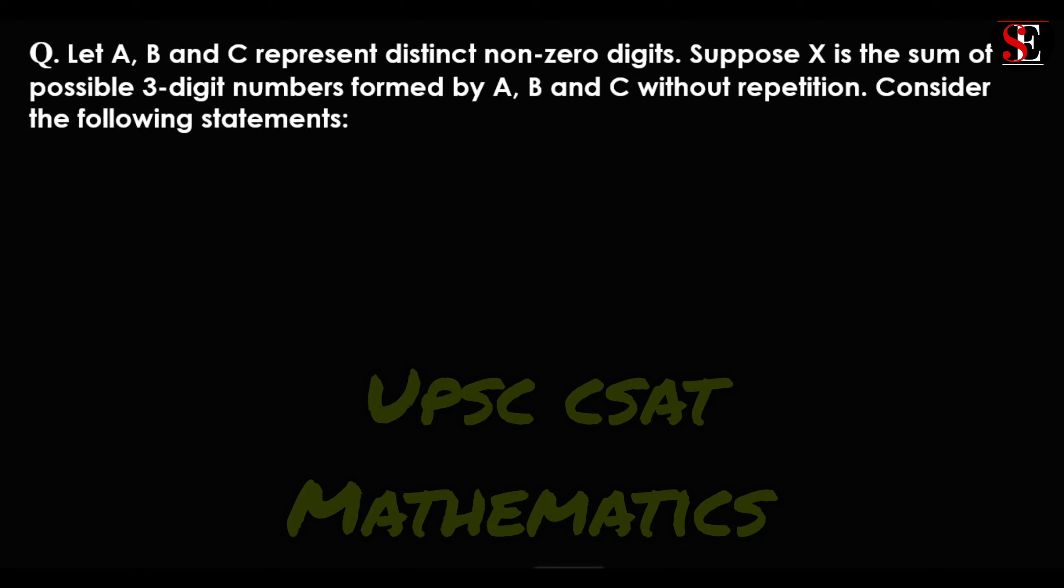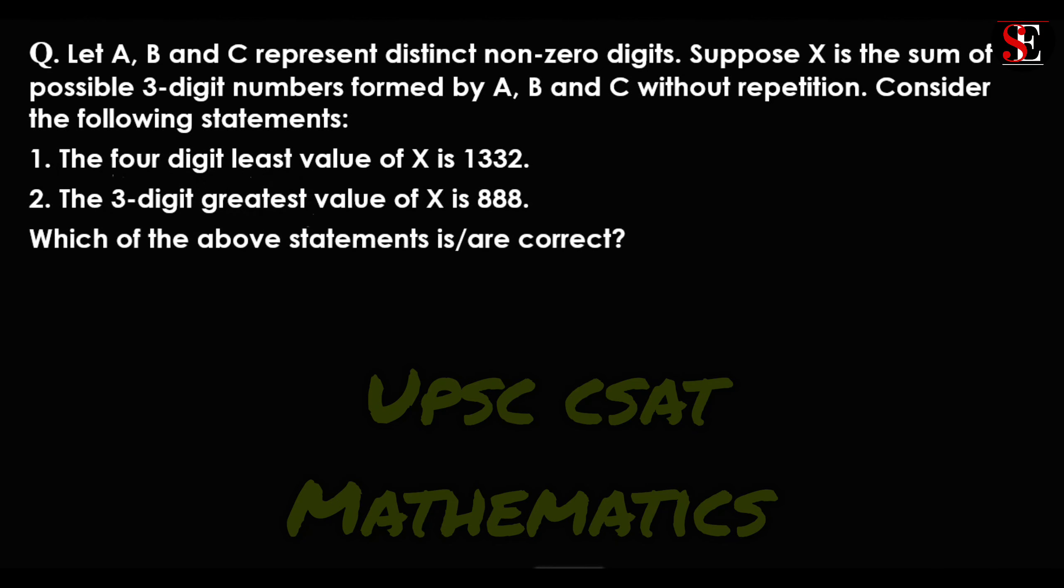Consider the following two statements. Statement 1 is the 4-digit least value of X is 1332, and the 3-digit greatest value of X is 888. Based on these two statements, four different options are given and you have to find out which statement is correct and which one is incorrect.